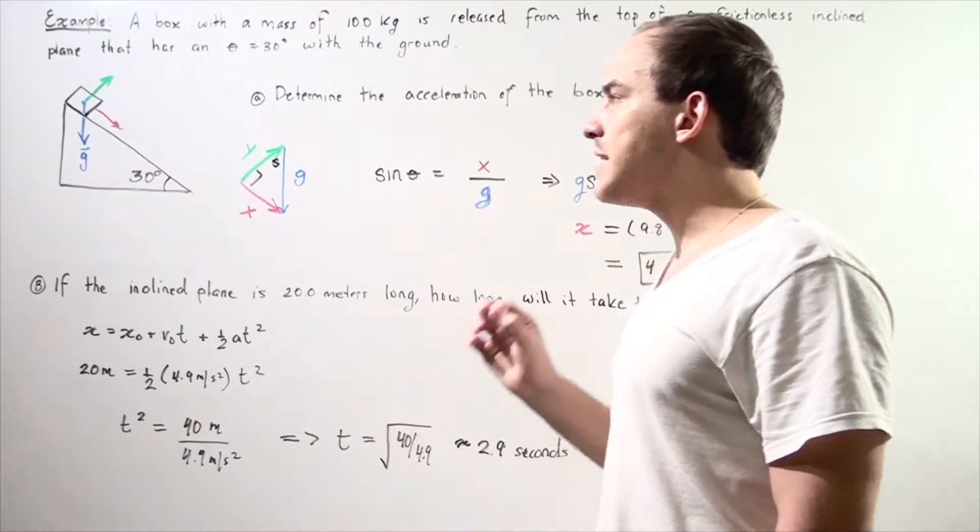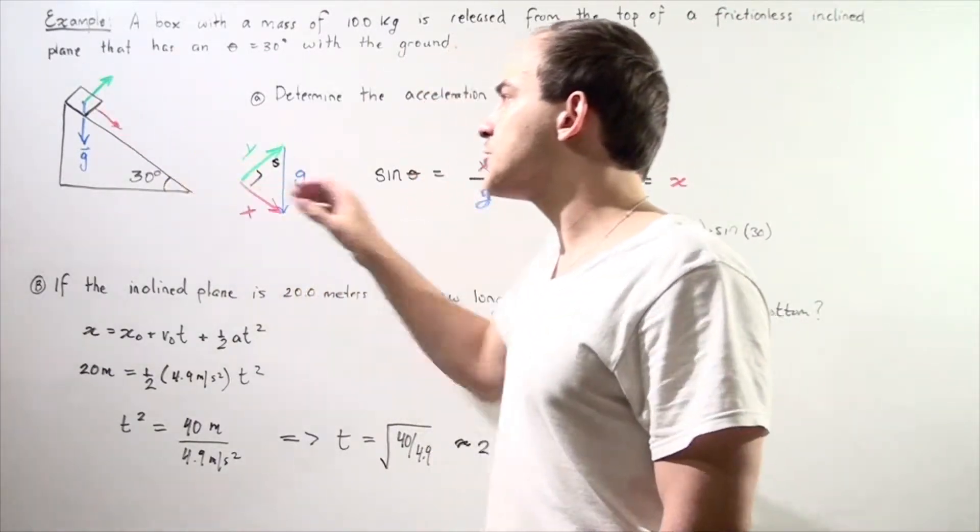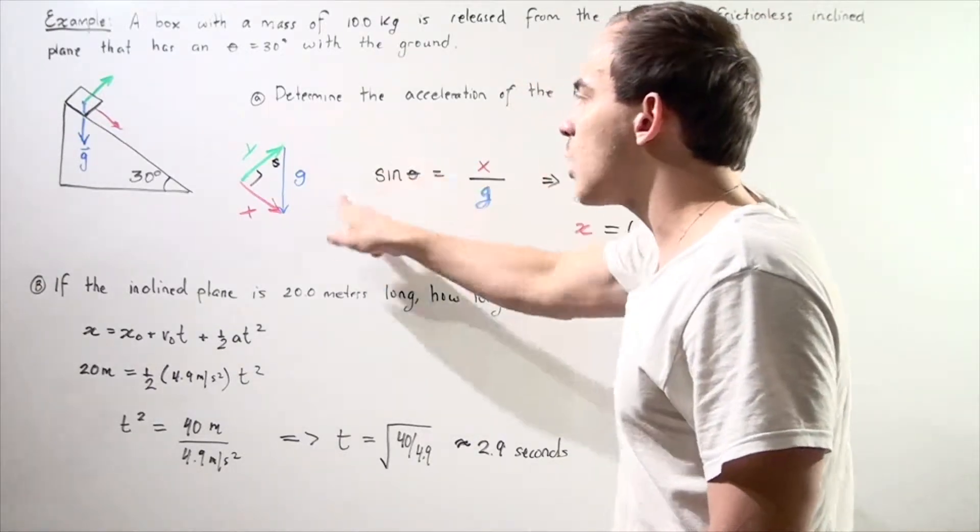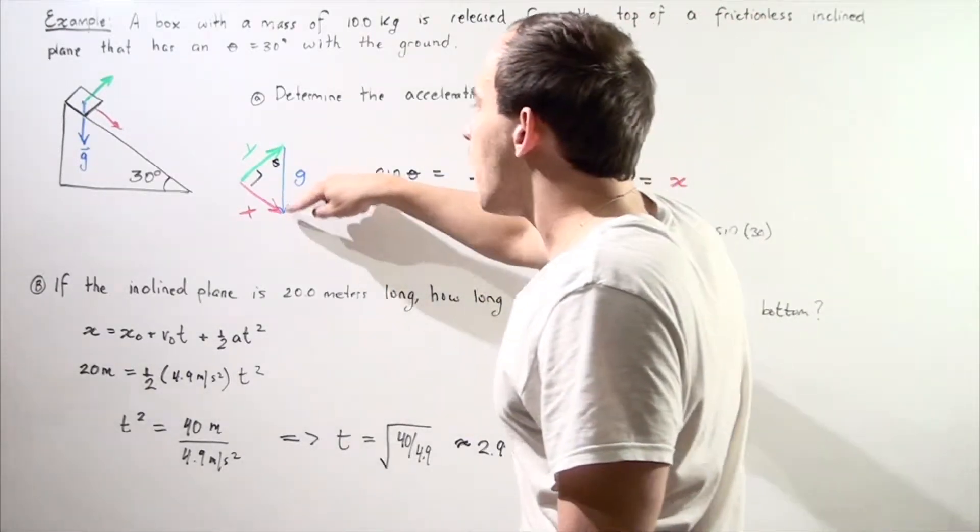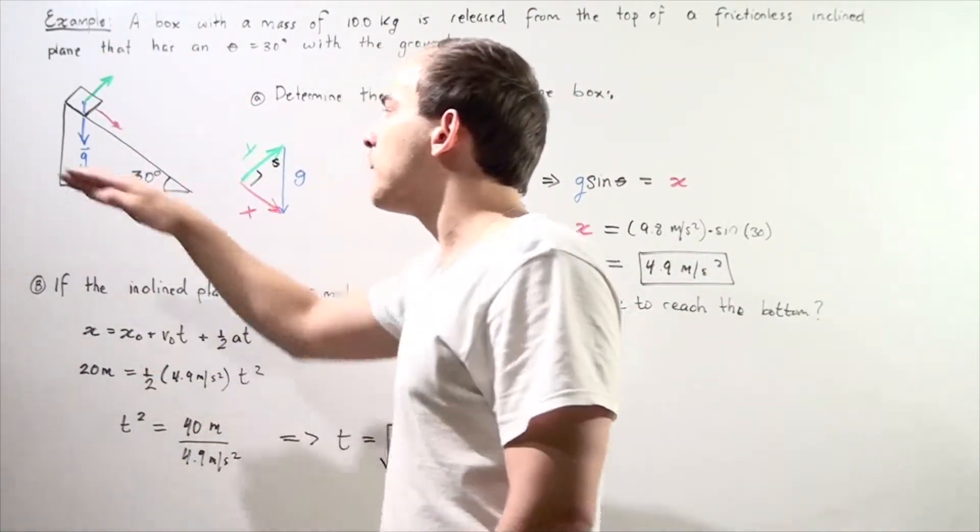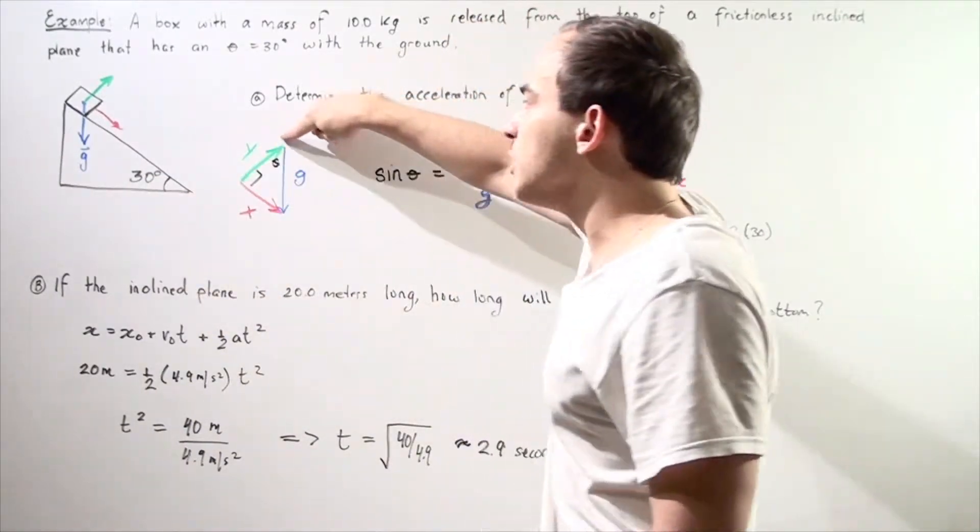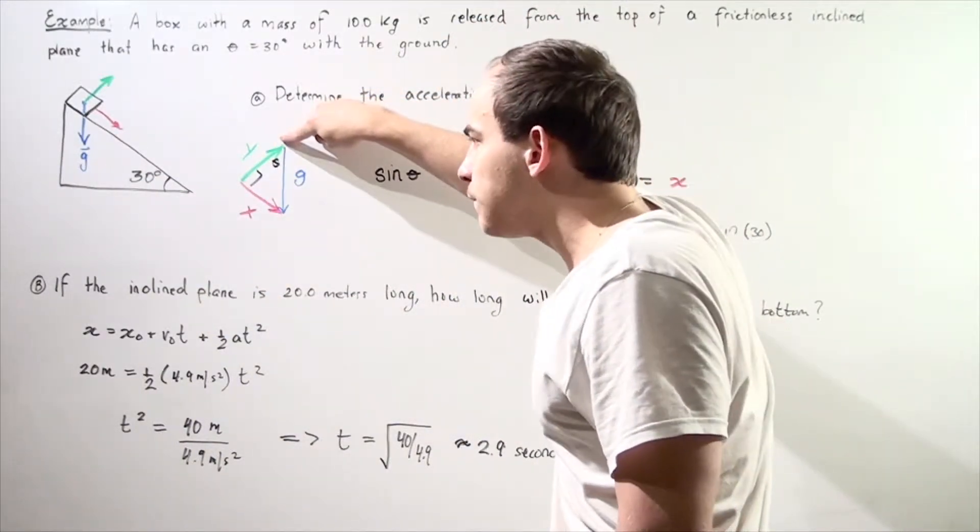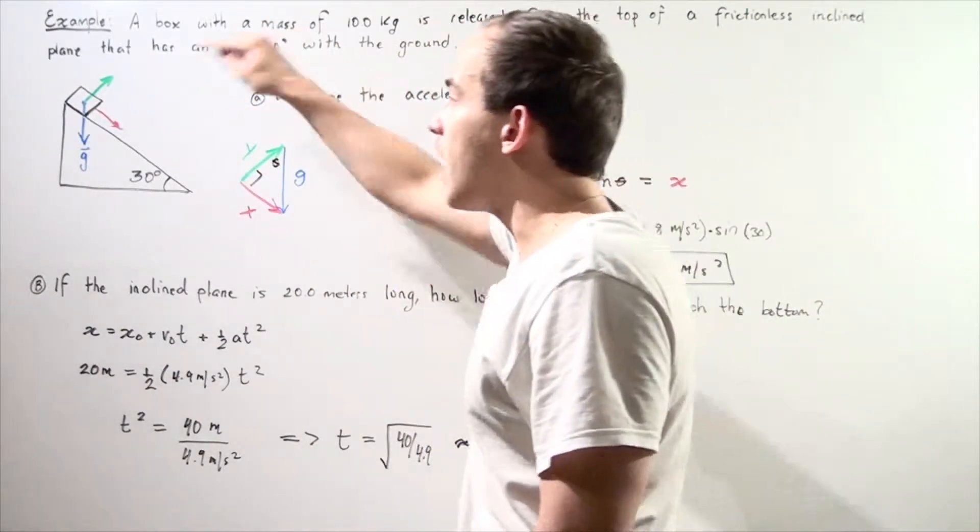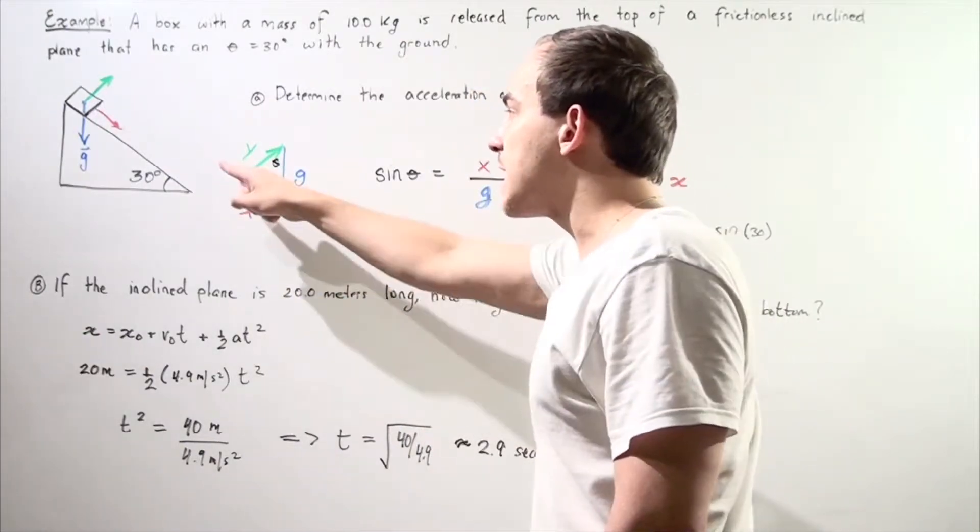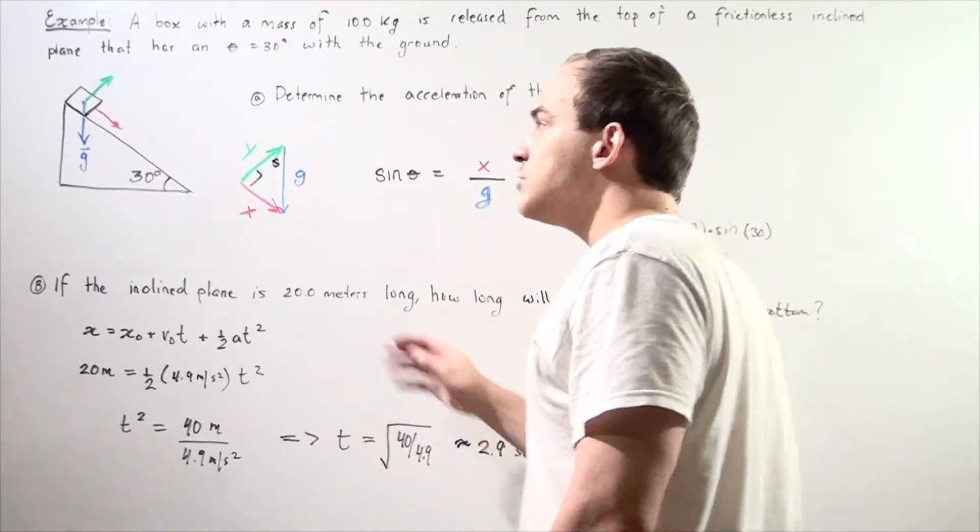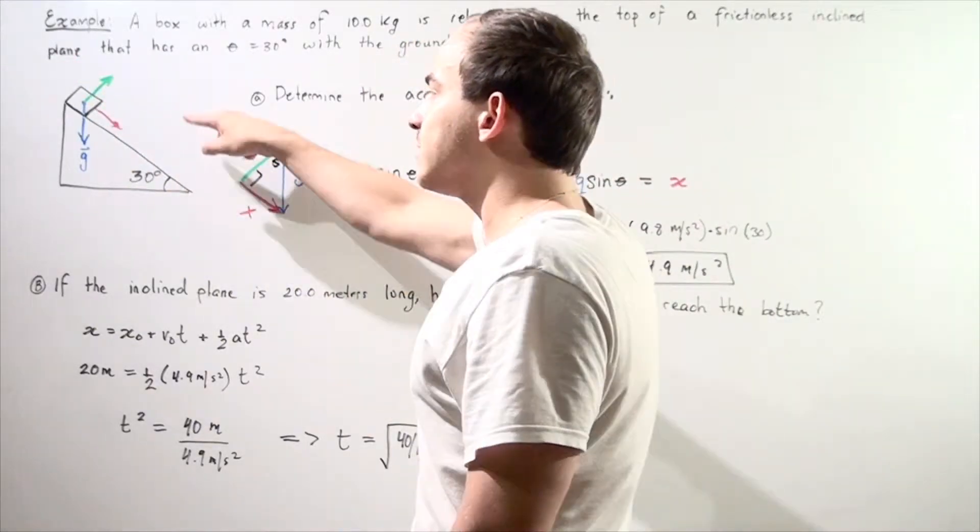In order to determine our acceleration of the box along the surface of the inclined plane, we need to build the following right triangle, where our hypotenuse is the gravitational constant G pulling downward perpendicular to the ground. This blue vector is our normal force with which our inclined plane exerts on the box. And this red vector is what we're looking for.